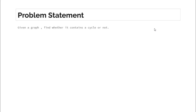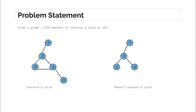The problem statement is: you are given a graph and you have to find whether the given graph contains a cycle or not. If we see an example, this graph contains no cycle, while this graph contains a cycle — a cycle between nodes two, three, and four.